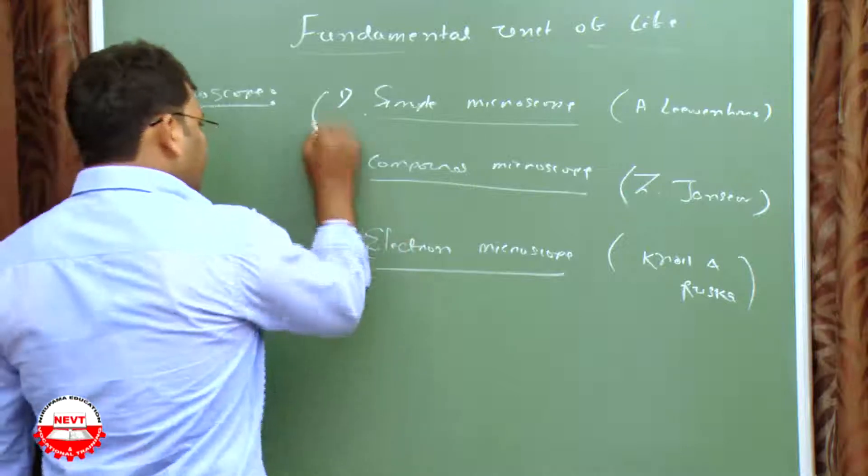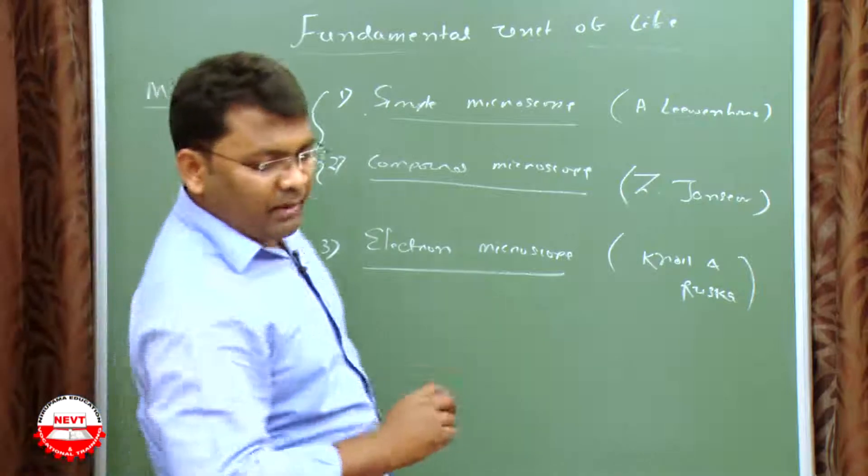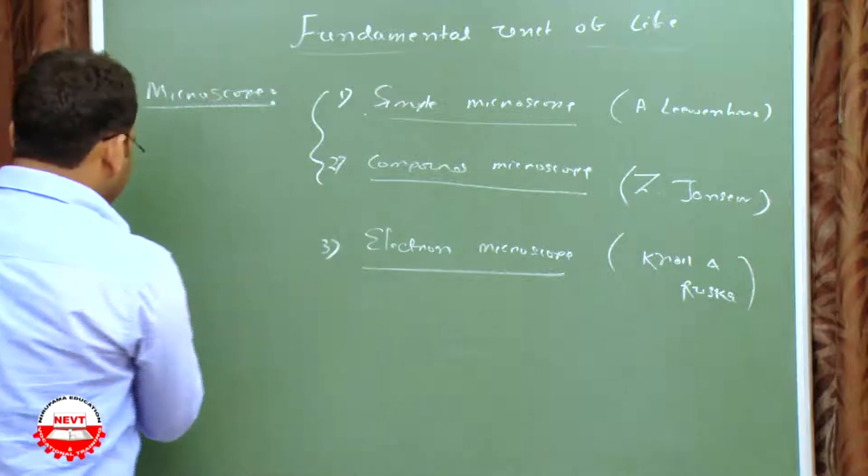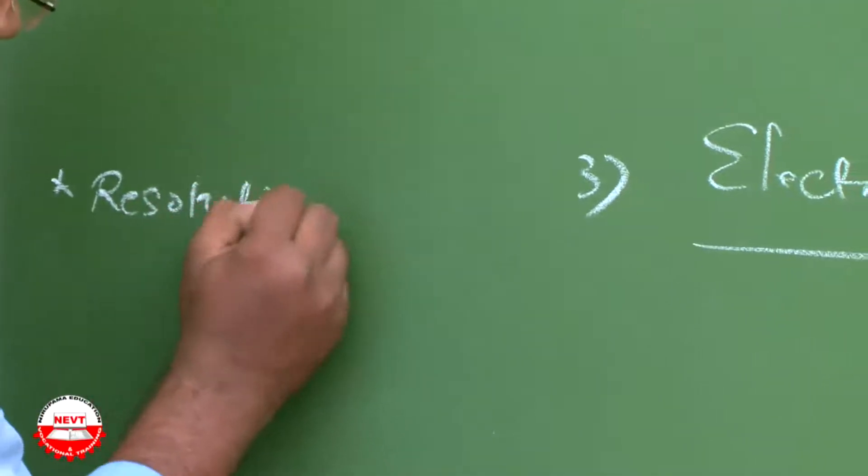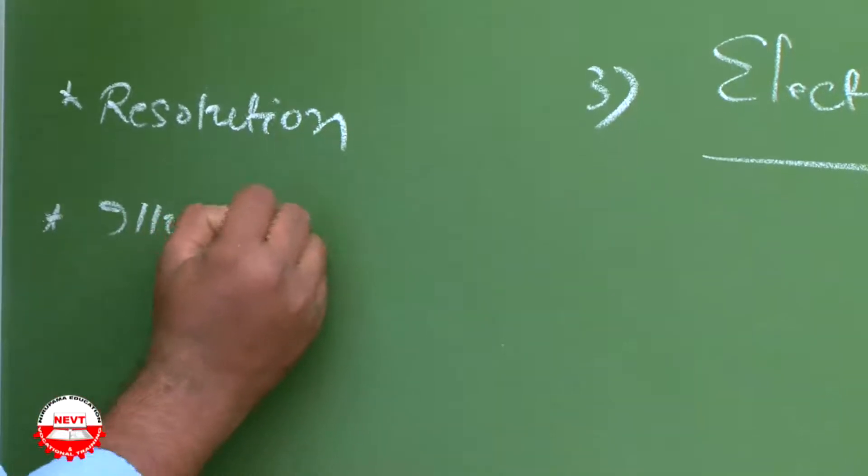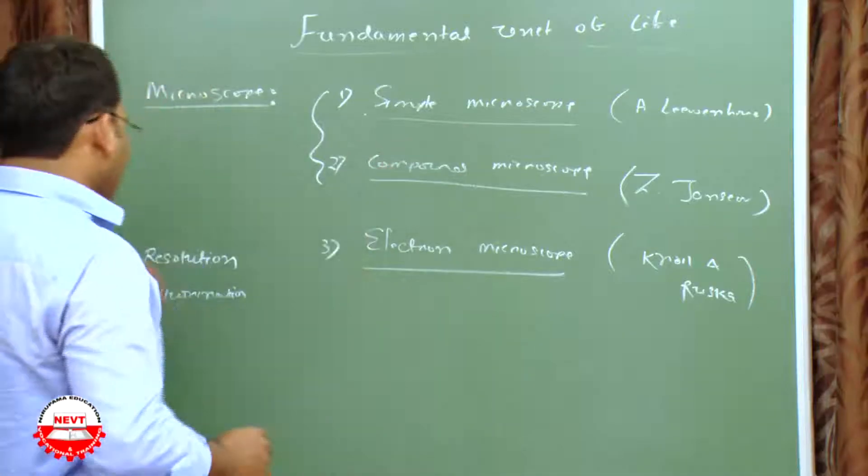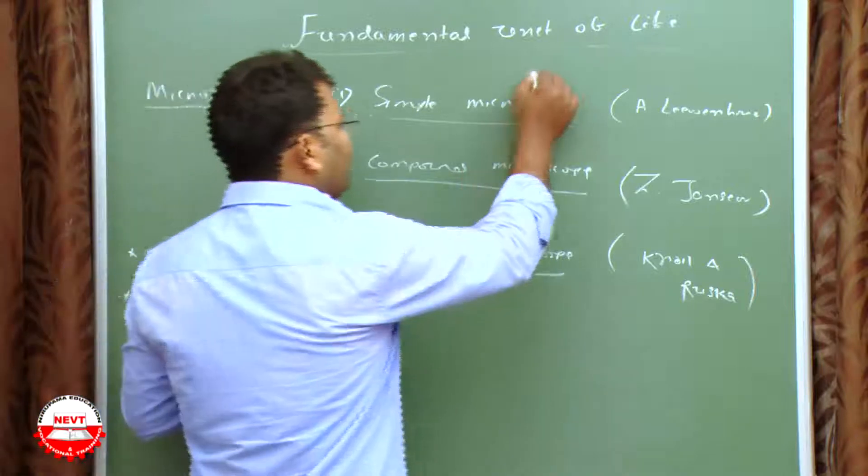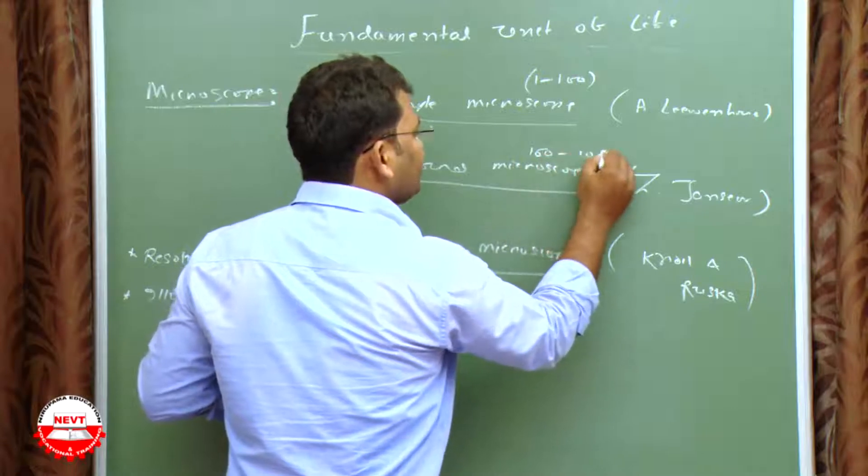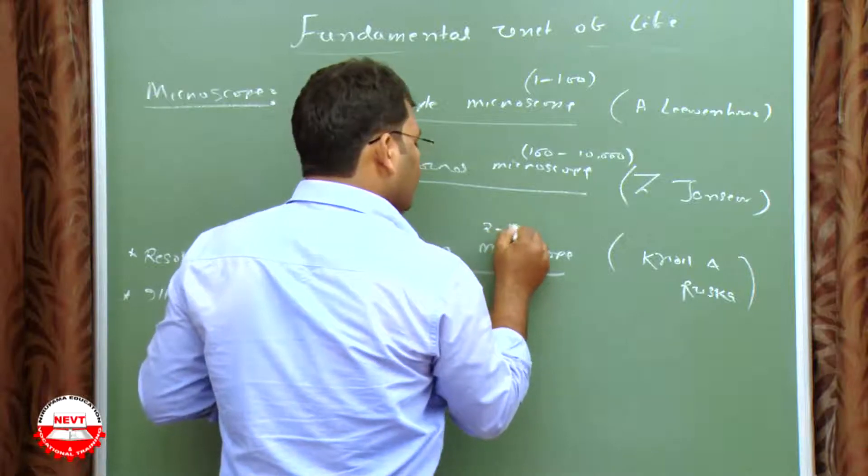So how are they working? These are having the same concept. Basically the microscope has two parts: the resolution part and the illumination part. Simple microscope has resolution from 1 to 100 times larger size from original. Compound microscope is from 100 to 10,000. Electron microscope is around 2 to 10 lakhs.